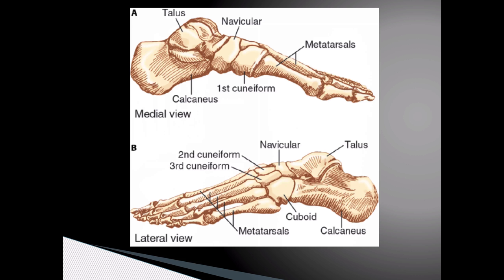Here we can see the foot both medially and laterally. The calcaneus, which is also known as the heel bone, serves as the insertion point of the Achilles tendon. We can see from this view that the cuneiforms are named medially to laterally. You can either refer to these bones as the medial, middle, and lateral cuneiform, or the first, second, and third cuneiform. The cuboid bone is the most lateral in this row of tarsal bones.